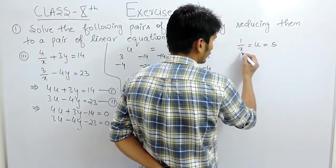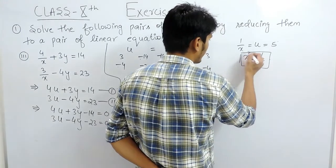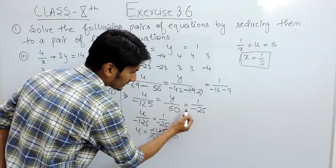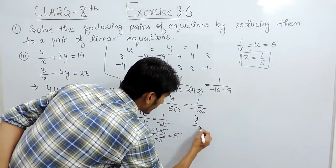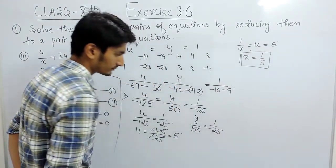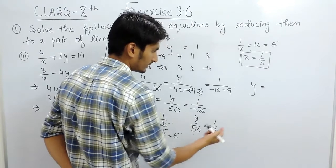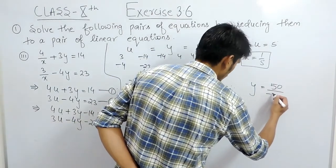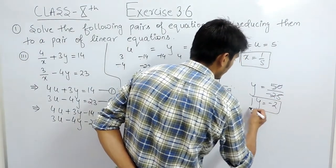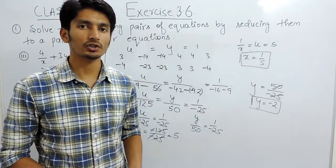Cross multiplying, the value of u will become minus 125 upon minus 25, which cancels to 5. So u equals 5, and since 1 upon x equals u, the value of x will be 1 upon 5. To find the value of y, equate y upon 50 equals 1 upon minus 25. Cross multiplying, y equals 50 upon minus 25, which simplifies to minus 2. So the value of y is minus 2.